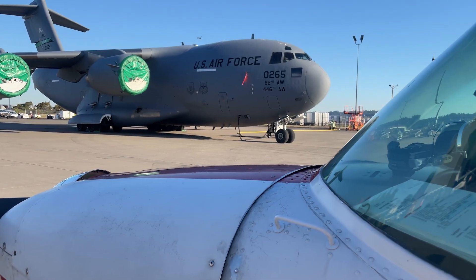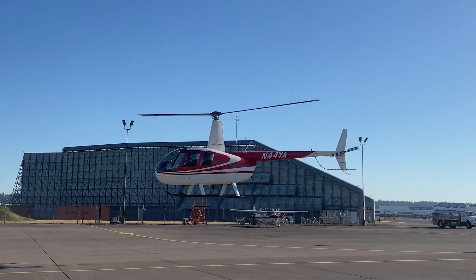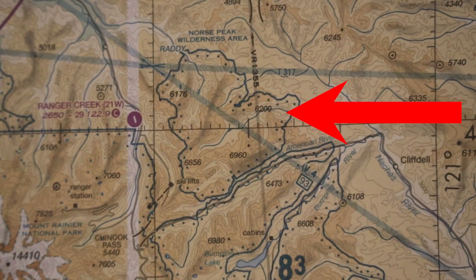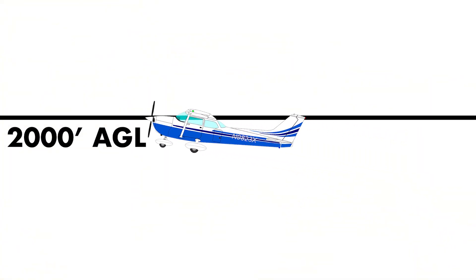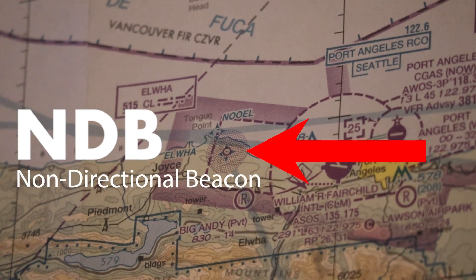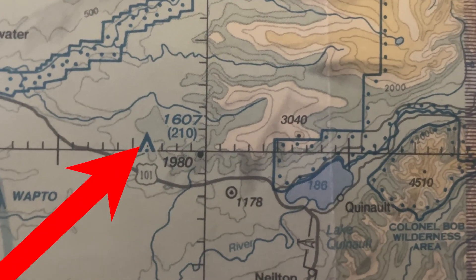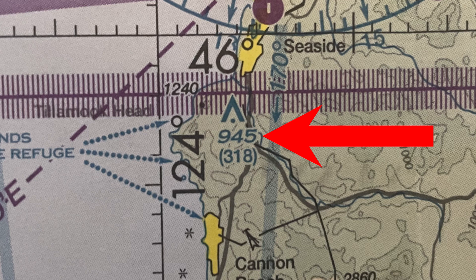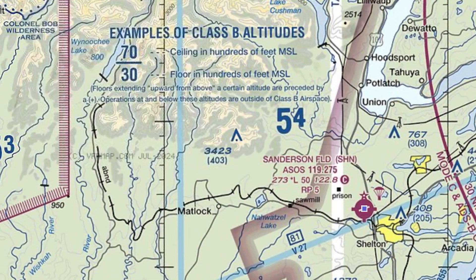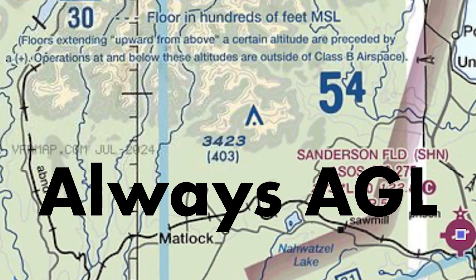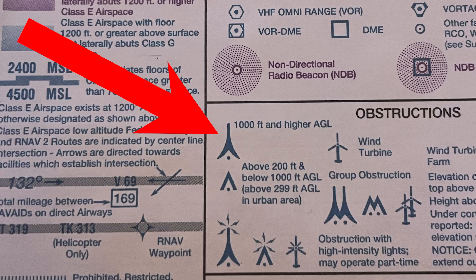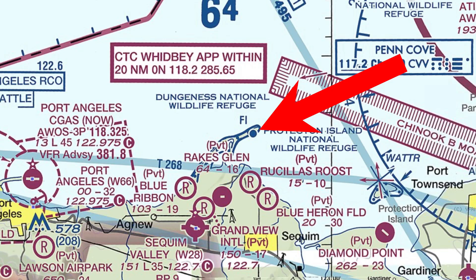Now that we've reached the middle of the video, I'm going to quickly go over some that are pretty simple. These are wilderness areas — you're requested to stay over 2,000 feet AGL when flying over these locations. This is the symbol for an NDB or non-directional beacon. This is the symbol for an NDB with distance measuring equipment. This is a tower less than 1,000 feet tall — it has the MSL altitude on top with the AGL altitude on the bottom in parentheses. Any altitude in parentheses on the VFR sectional is always going to be an AGL. This is a tower taller than 1,000 feet. This is a marine light.